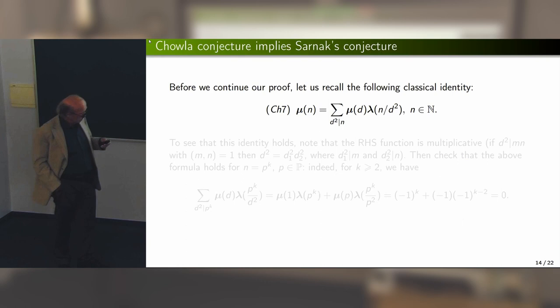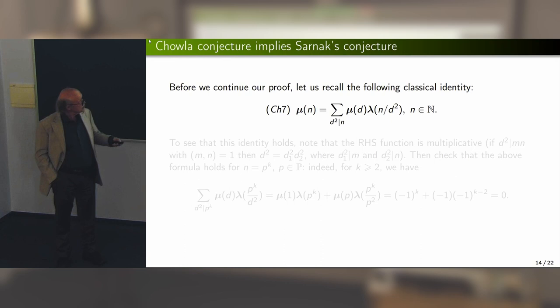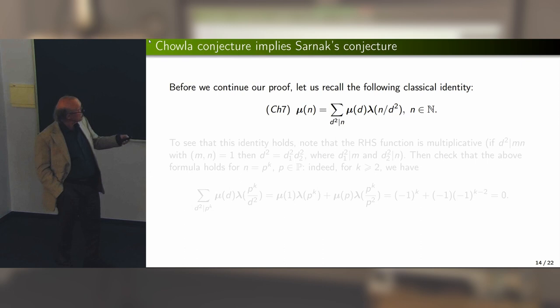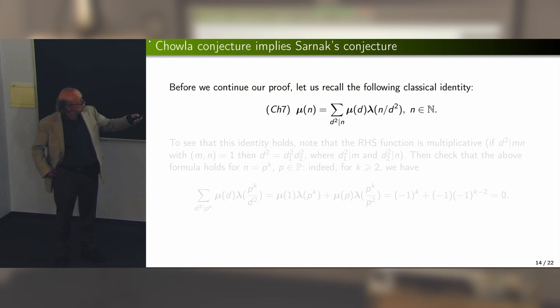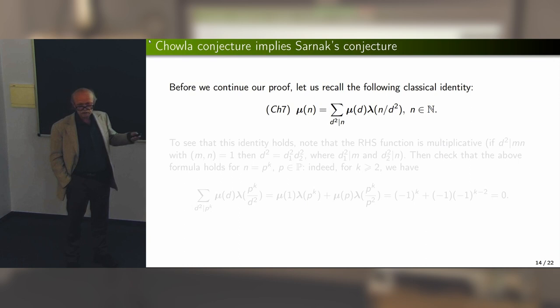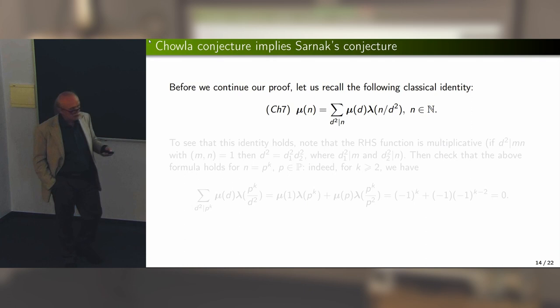We proved Sarnak's conjecture for the Liouville function. Now, how to go from Liouville to the Möbius function. The starting point is the identity: mu(n) = sum_{d^2 | n} mu(d) lambda(n/d^2). You can check this; it resembles Dirichlet convolution. The proof is exactly the same as showing that if you have two multiplicative functions, their Dirichlet convolution remains multiplicative. Both sides agree on prime powers, and mu(p^k) = 0 for k ≥ 2 simplifies the verification.